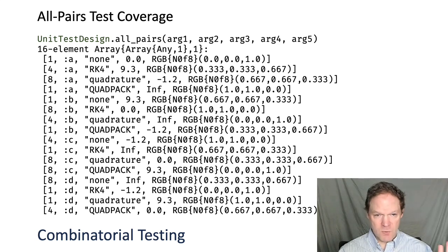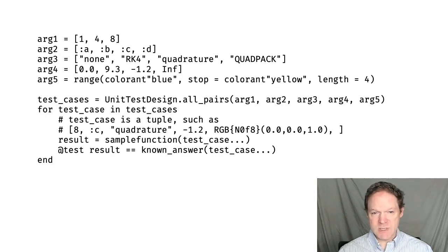It's one of the test designs in the unit test design library. So how do we use this in practice? This is what a unit test using all-pairs would look like. First,